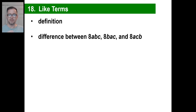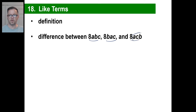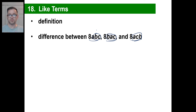What is the difference between 8abc, 8bac, and 8acb? The answer starts with 'noth' and ends in 'ing' — that's right, nothing. There's no difference among these three. It doesn't matter what order you multiply numbers or variables in. You get the same thing. 8 times 2 times 3 is the same as 8 times 3 times 2, and so on. You can visualize those as the same thing.